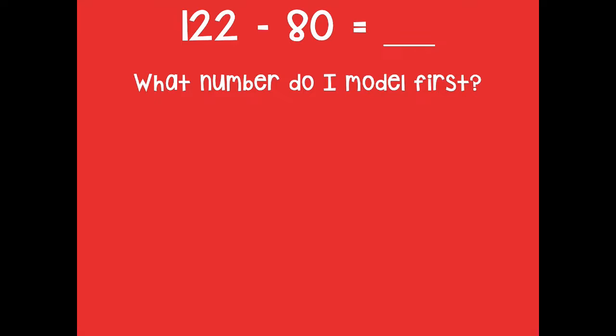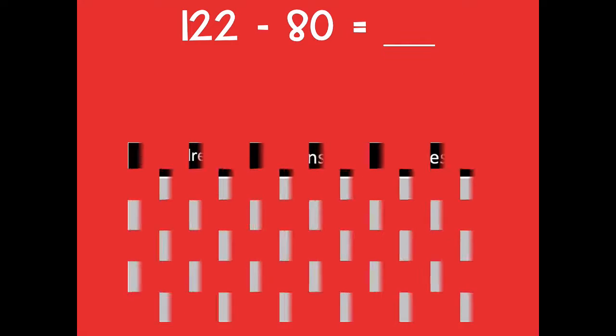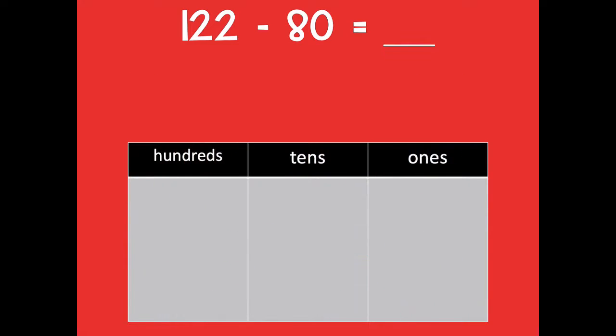What number do I model first? Am I going to model 122 or 80? We're going to model 122 — when subtracting, we always model the larger number. So let's model 122 on our place value chart: we have 100, two tens, and two ones.